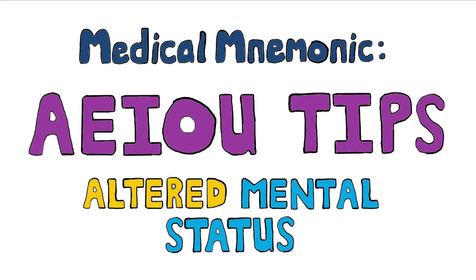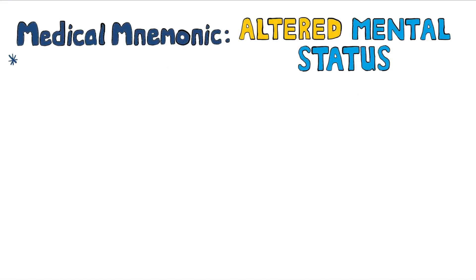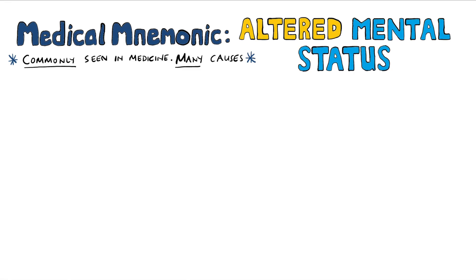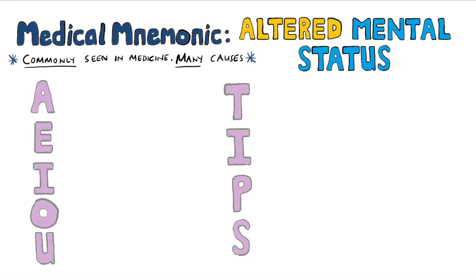A-E-I-O-U TIPS is a mnemonic that helps you remember which letters are vowels as well as the causes of an altered mental status. An altered mental status is something that's commonly encountered in medicine and has many causes, so knowing this mnemonic should help you in narrowing down the causes for your particular patient.